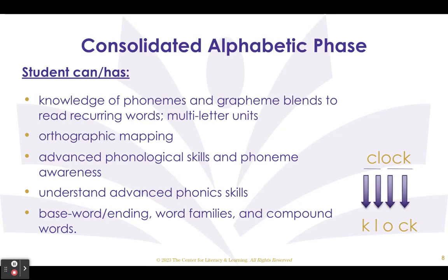The final phase is the consolidated phase. A child in the consolidated phase quickly sees recurring patterns of phoneme-grapheme relations, such as the letters O, C, K in 'clock.' These recurring patterns help the child to read other words such as knock, block, and sock. A child in this phase also sees multi-letter units, such as the letters A, M, P when reading the words camp, damp, and lamp. Seeing these multi-unit patterns increases decoding accuracy and automaticity. A child is in the consolidated phase when multi-letter units predominate in reading.